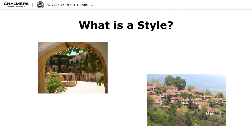An important aspect of styles is the quality properties offered by the style, reflecting its benefits and limitations. On the slide, you see two different building architectural styles. On the left, a traditional Berber house that takes the form of a large pit dug in the ground. And on the right, houses with an angular roof.